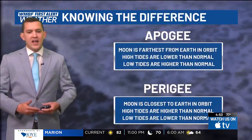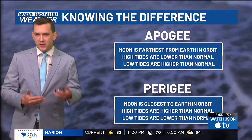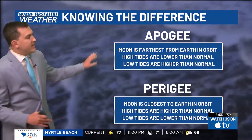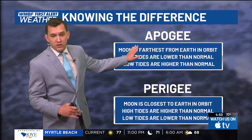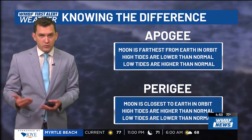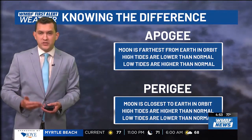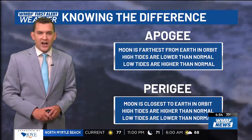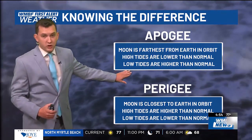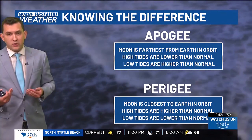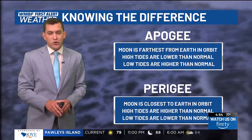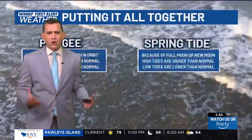To explain the difference: when the moon is farther away from Earth in its elliptical orbit, we call this apogee, meaning lower than normal high tides. While perigee, when the moon is closer to Earth, there are greater gravitational forces from the moon, bringing higher than normal high tides.